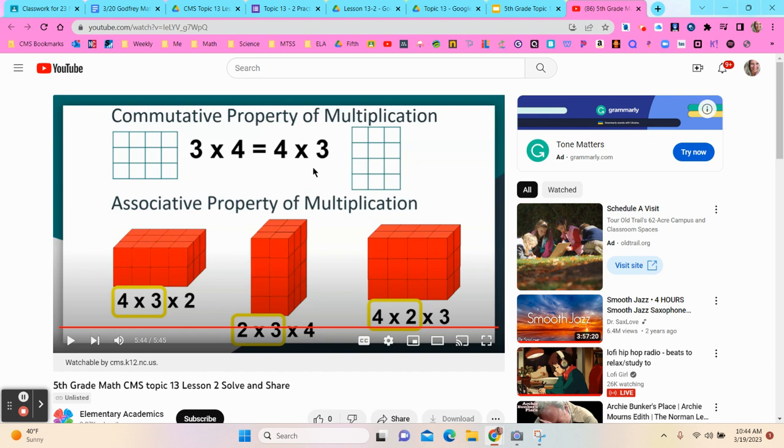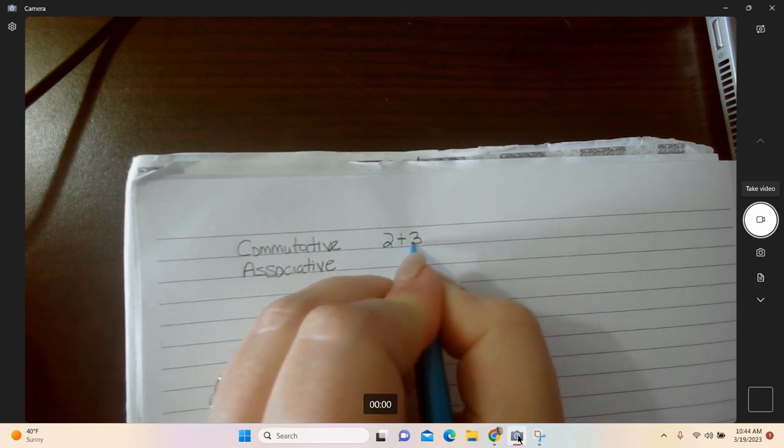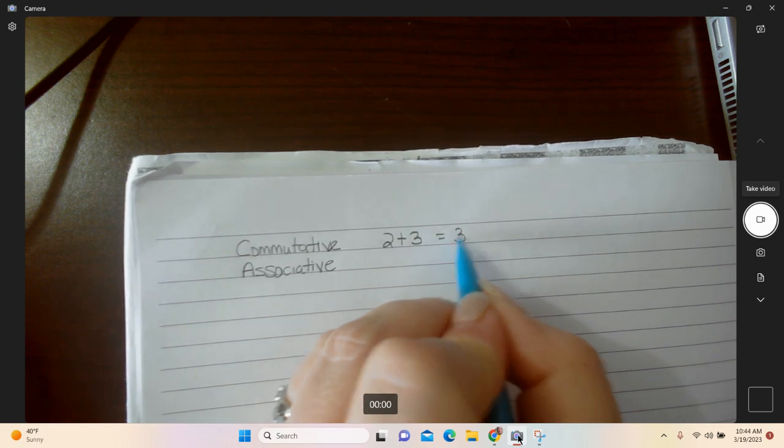So if you look at the picture right here on the top, you can see that you kind of already know about the commutative property because your whole life for adding, you know that if you have two plus three, it's exactly the same as three plus two.